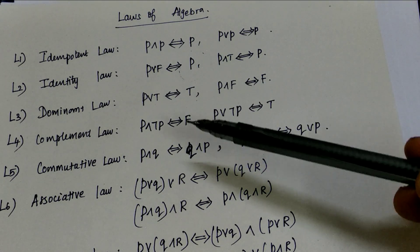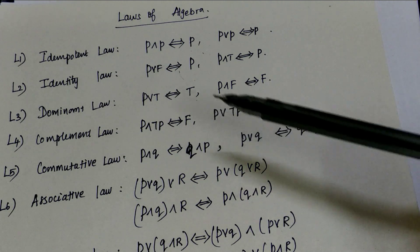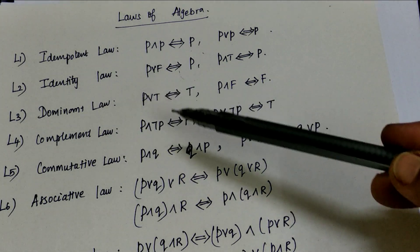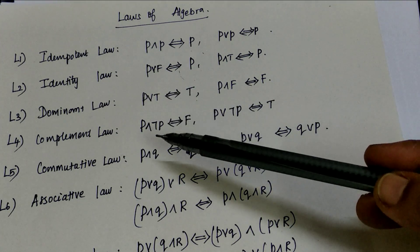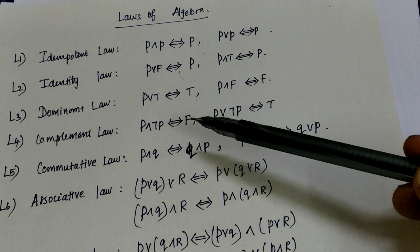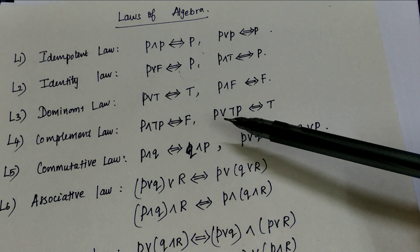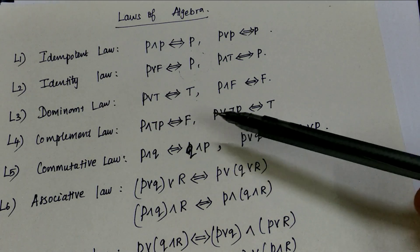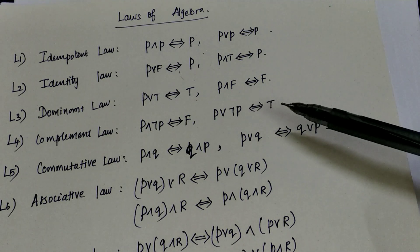Complement law gives the conjunction and disjunction between the statement and its negation. P or negation P is false; P and negation P is false; P or negation P is true.